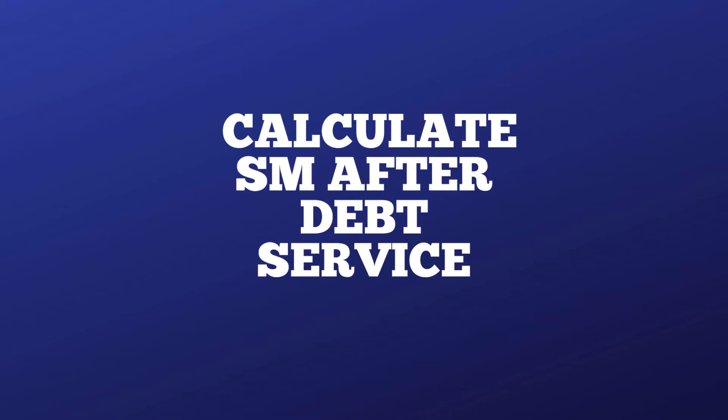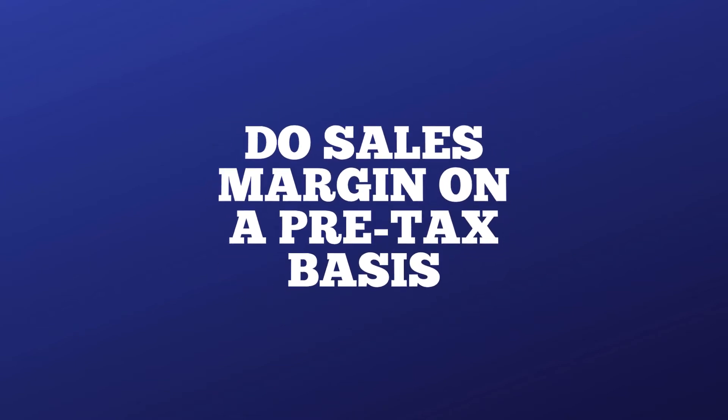If our sales margin is a meager 2%, you'll have almost no room to absorb a cost overrun of the project or make any adjustments to pricing in order to accelerate sales. Also, the calculations should be performed before tax, because tax is a variable expense — it only applies if there is profit. No profit, no tax.